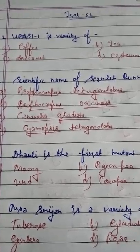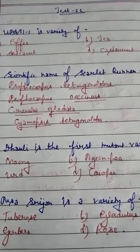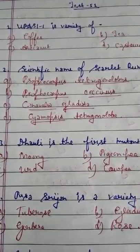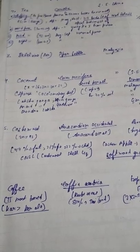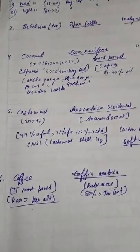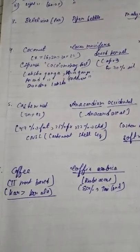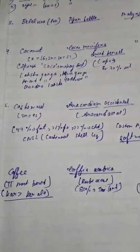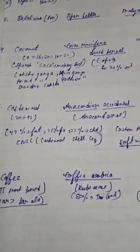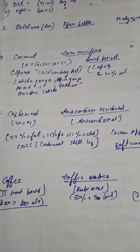Question number 1: Upasi 1 is a variety of — option A coffee, option B tea, option C areca nut, option D cashew nut. This Upasi 1 variety is very important. Let's explore the options. Coffee is the second most important traded crop in the world and Karnataka has the highest production of coffee.